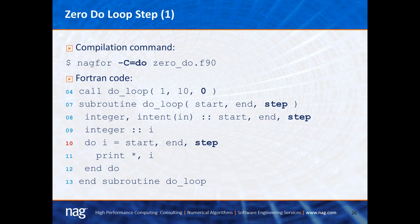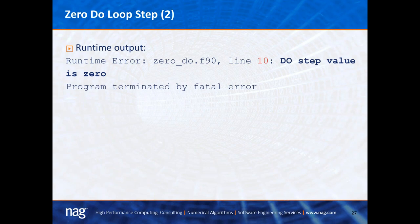The next check detects a zero do loop step, invoked with the -C=do flag. In the example, line 4 calls subroutine do_loop passing 1, 10, and 0. Line 7 corresponds to start, end, and step, and line 10 has a do loop that starts at start, ends at end, and steps through the step variable, which is obviously zero. Normally this would result in a floating point exception. But executing it with the NAG compiler reports: 'line 10, do step value is zero' — which is much more useful than a segmentation fault.